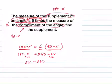So 5X equals, and let's subtract 180 from both sides, 360. And therefore, X equals 360 divided by 5, which is 72.